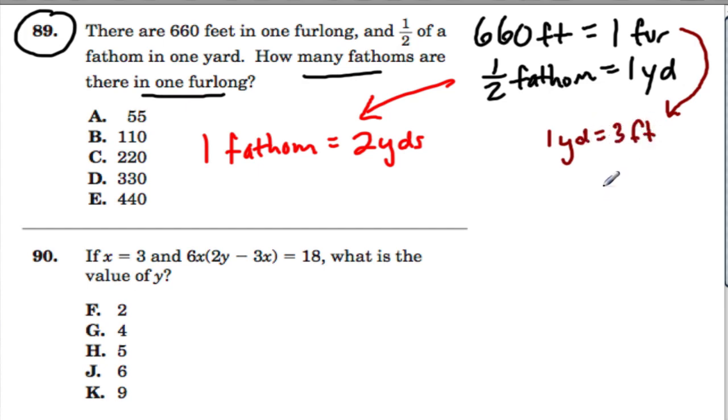Let's make the connection here between furlongs and yards, and that will help us connect to fathoms. So instead of 660 feet, we want to know how many yards that is. For every three feet we have one yard, so let's divide 660 by three to find out how many yards that we have, and that is 220.